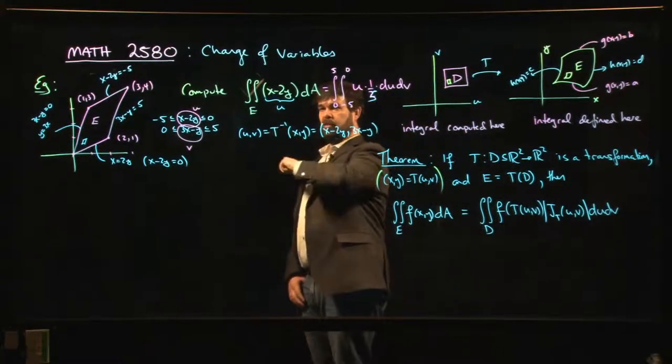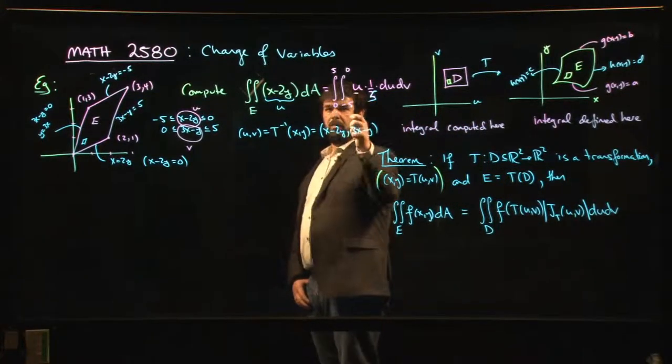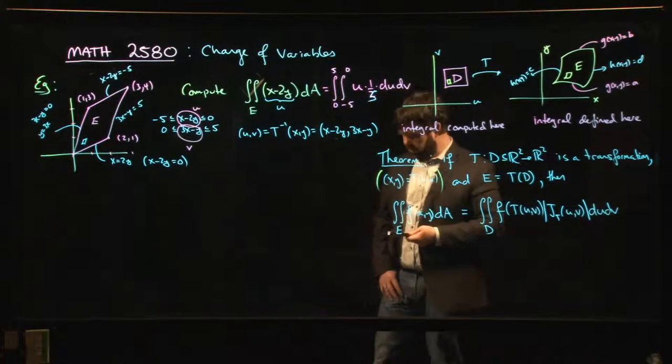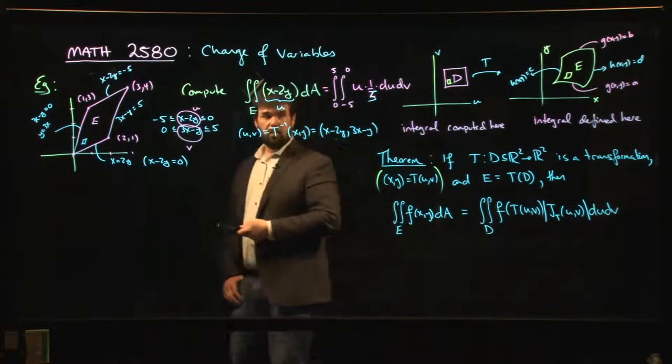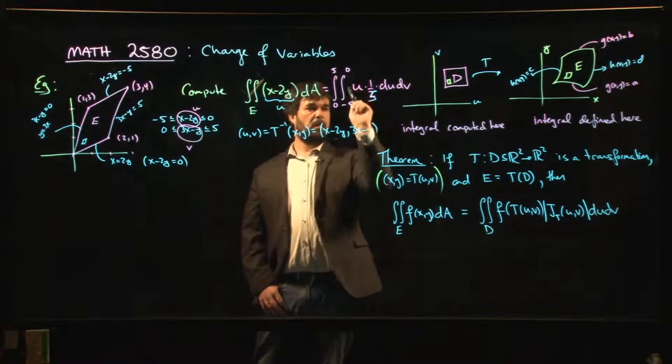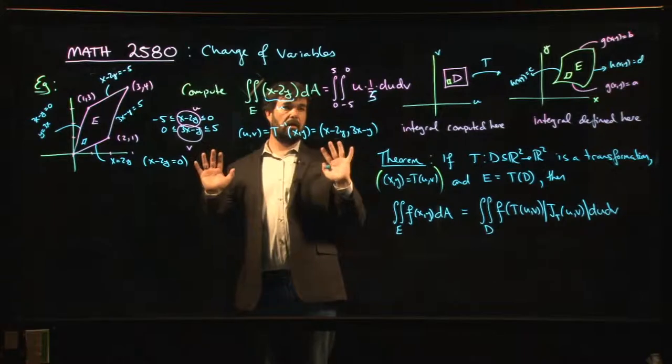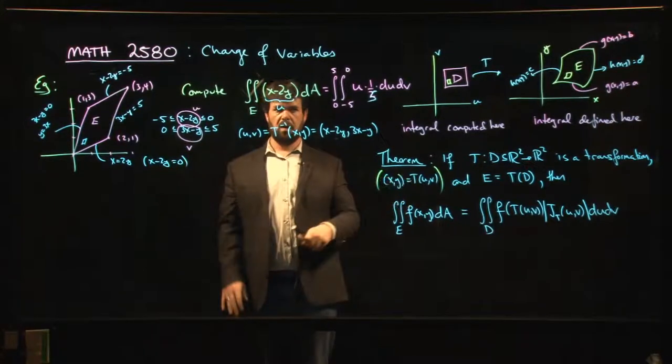We worked out that my function in terms of x and y could be written as simply u when I write it in terms of u and v. So we put in our function in terms of u and v, we multiply by the Jacobian, and now we have a simple integral over a rectangle.